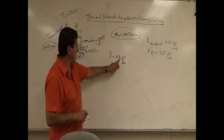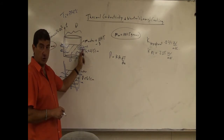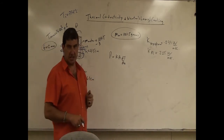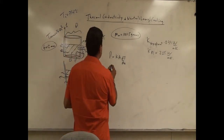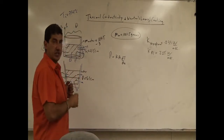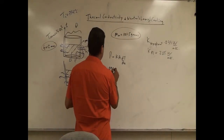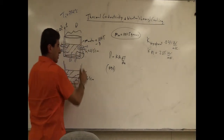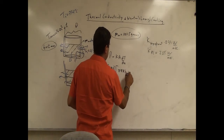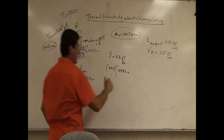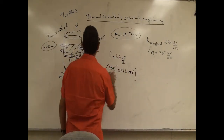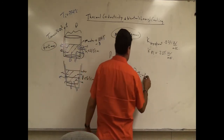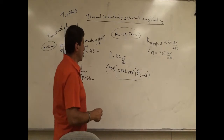K is the conductivity of the walls. A is the surface area of contact of the water with the walls and bottom. dT is the change in temperature between the inside and outside, and dX is the thickness of the walls. The conductivity of styrofoam is 0.033. The surface area is 2πr times the height for the side, plus πr² for the bottom. The change in temperature is the inside temperature minus the outside temperature, which is 26 Celsius, divided by the thickness of the wall.